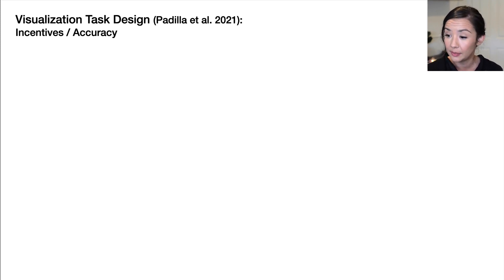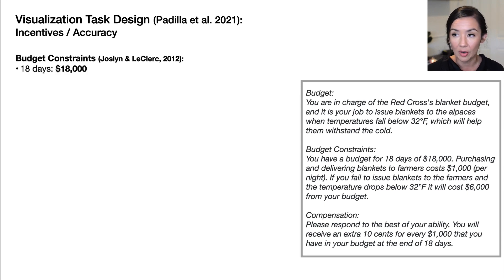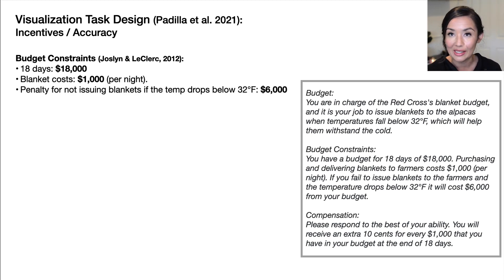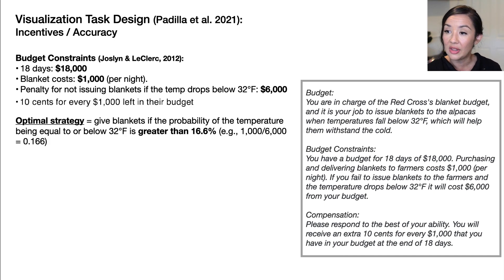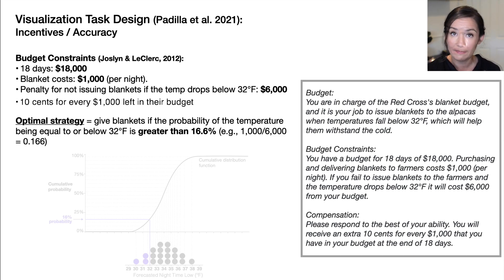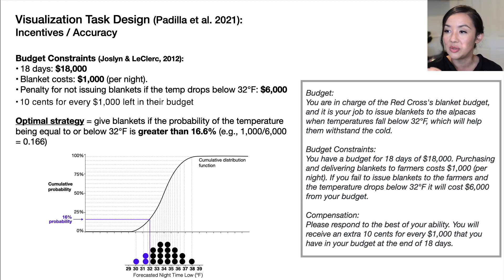Let's look at incentives and how we evaluated accuracy. These are the actual instructions we provided, but here I'll summarize. We told people that they had a budget as a Red Cross risk manager. For 18 days, they had $18,000. Issuing blankets cost $1,000 per night, and there was a penalty for not issuing blankets if the temperature did drop below 32 degrees Fahrenheit, and that was a $6,000 penalty. They would receive 10 cents at the end of the experiment for every $1,000 they had left in their budget. So the optimal strategy for this task was to give blankets if the probability of the temperature being equal to or below 32 degrees was greater than 16%. That's based on the penalties and the cost of the blankets.